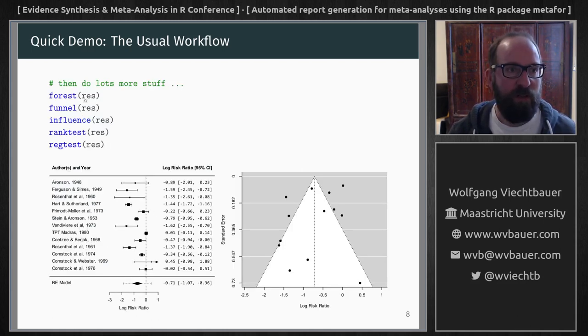And then we can do things like forest plots, funnel plots, we can check for outliers and we can run the rank or the regression test for funnel plot asymmetry which may be indicative of publication bias.